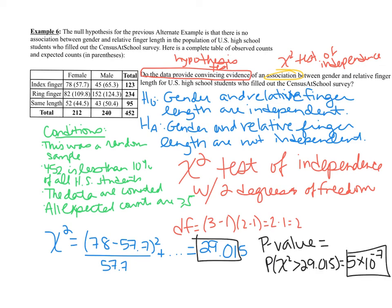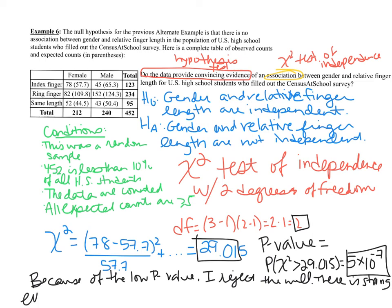The last thing you're going to do is write your conclusion. We're going to say the p-value is very low. Because of the low p-value, I reject my null hypothesis. There's going to be very strong evidence of an association between gender and finger length.